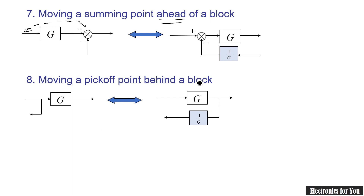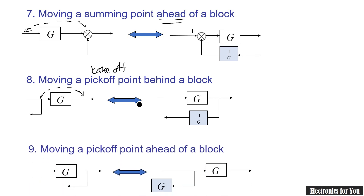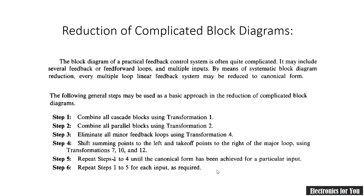The eighth rule is moving a takeoff point — also known as a pickup point — after a block. If you move the takeoff point after the block, the branch transfer function gets divided by the block's transfer function, giving 1 divided by G. The ninth rule is moving a takeoff point ahead of a block, that is before the block. In this case, the transfer function gets multiplied by G. These are all the rules of block diagram reduction.